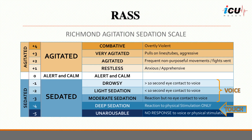The RASS scale ranges from minus 5 to plus 4 and assesses the level of agitation or sedation in critically ill patients, with negative scores representing various levels of sedation and positive scores indicating increasing levels of agitation. A score of 0 signifies that the patient is fully alert and exhibits a calm demeanor. This is the desired state in most clinical situations, where the patient is awake, aware, and not agitated or sedated.